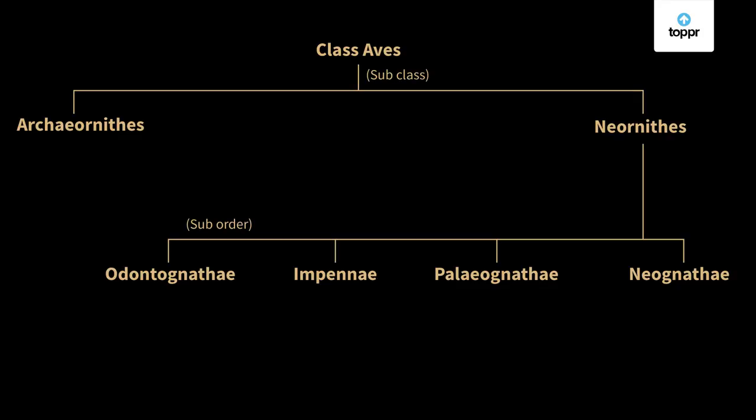To summarize Aves: they have thin dry skin covered with feathers that conserve body heat, forelimbs modified into wings with fingers without claws and toes armed with claws, spongy elastic lungs with air sacs, a voice box called the syrinx, a four-chambered heart, amniotic eggs with internal fertilization, no larval stages, body heat generated by rapid metabolism, and they show nest building and parental care.